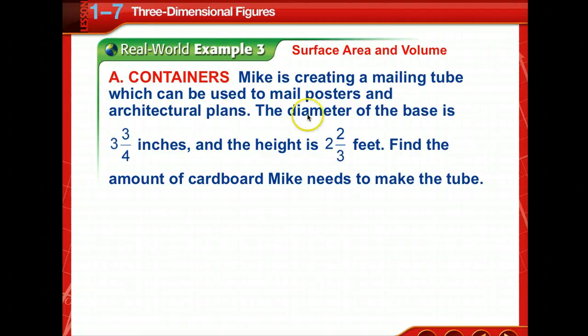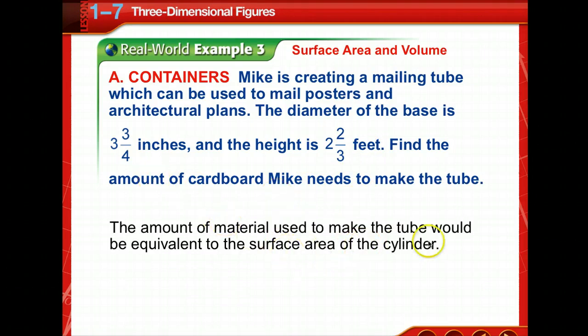So let's mix it up a little bit. Mike is creating a mailing tube. So what shape is that? Yeah, we're talking a cylinder. To mail posters and architectural plans. The diameter of the base is 3 3/4 inches and the height is 2 2/3 feet. I see a problem here. Inches and feet. So I'm going to have to do some conversions. Find the amount of cardboard Mike needs to make the tube.